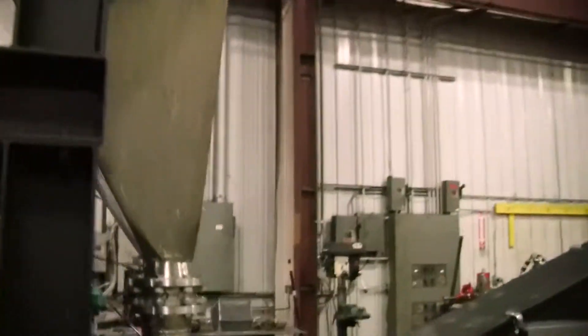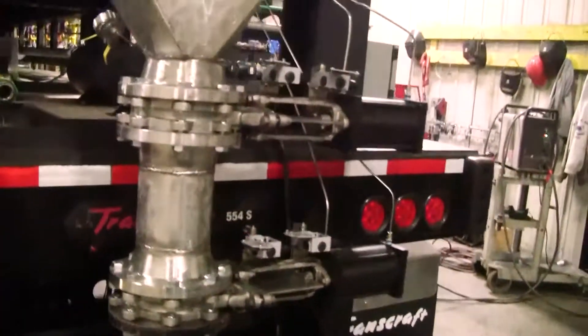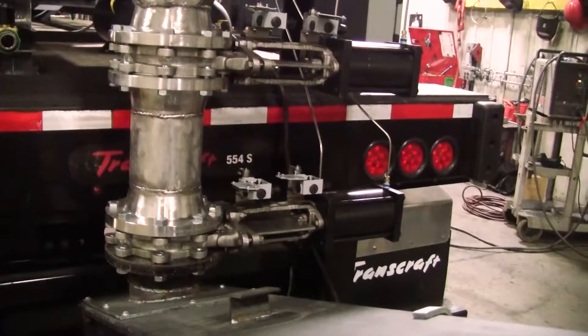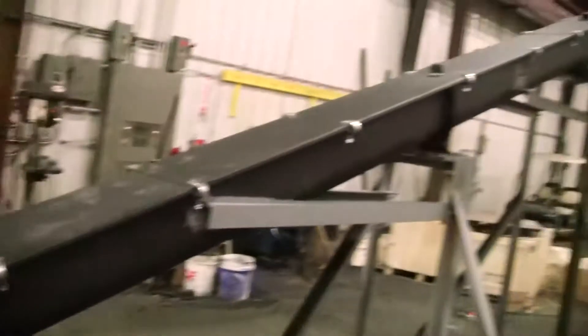Material discharge is also through double pneumatically operated knife gates with high-temp seals. 20-foot discharge screw conveyor.